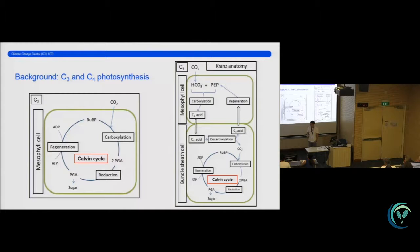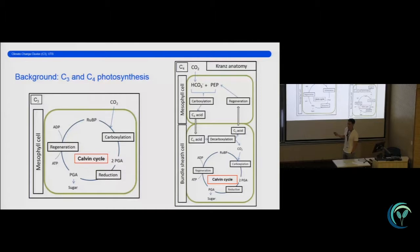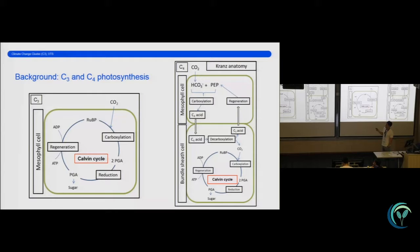So just to go over the C3 and C4 plants, as it's important for the rest of the talk. Essentially here on the left we have a schematic of a C3 photosynthetic system, whereby carbon dioxide is diffusing into the mesophyll cell, where it can carboxylate ribulose bisphosphate. This produces a three-carbon molecule, hence the name C3, which is further reduced into a sugar used by the plant.